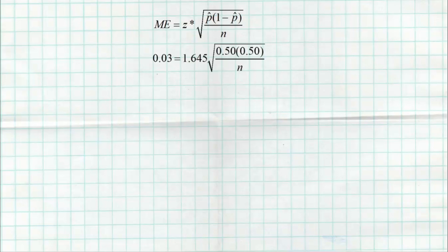We were told we want a margin of error of 0.03. The Z-star, based on 90% confidence, is 1.645 — you can find that using your TI-84 or look it up in your AP Stats reference guide. For P-hat, since we haven't looked at a sample yet, we just use 0.5 and 0.5 — we haven't even looked at a sample yet to know what to put there, so it's no harm, no foul to just put 50-50.